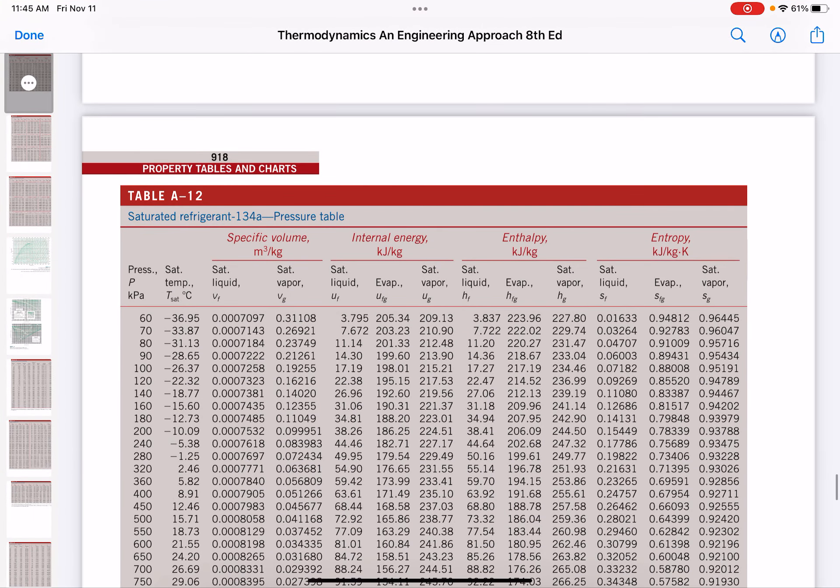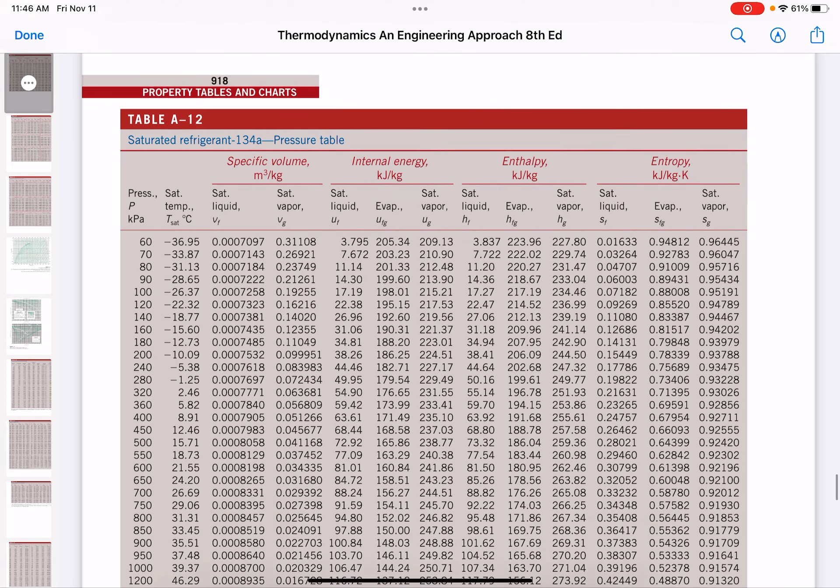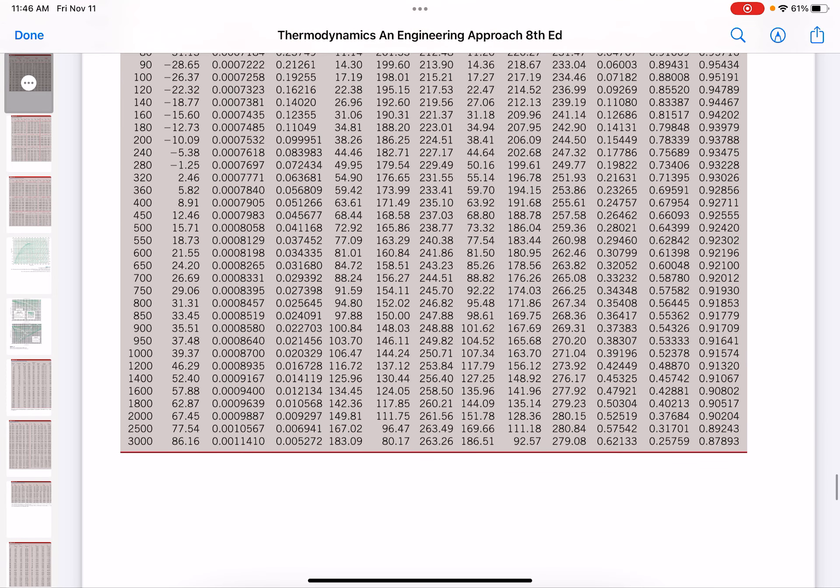So we are looking at saturated refrigerant tables at 900 kilopascal. And the saturation temperature at that pressure is 35.51, which is lower than what we have. So it means we already passed that saturation temperature. We have 60 degrees Celsius, which is above 35. So that means there was already a phase change, and we actually passed that phase change region. So therefore, the region we are located at that temperature is actually we have a superheated vapor.